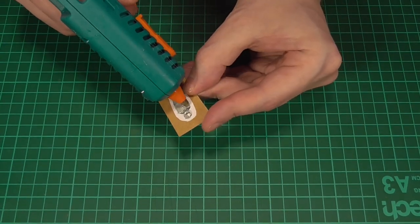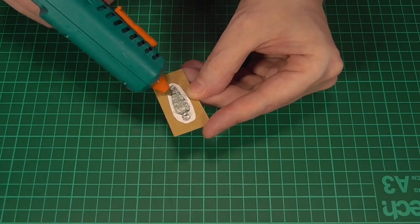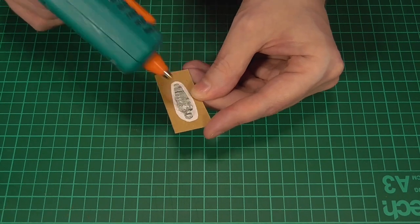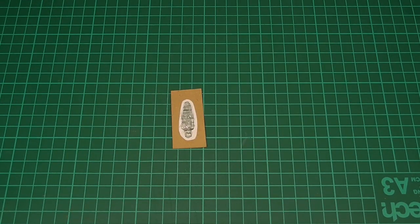And like before, it's best to build this up in stages. So as you can see, I'm doing the second layer of hot glue now. And then I'll leave it to dry again.